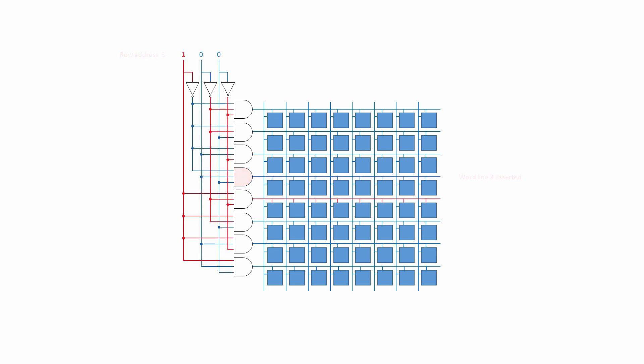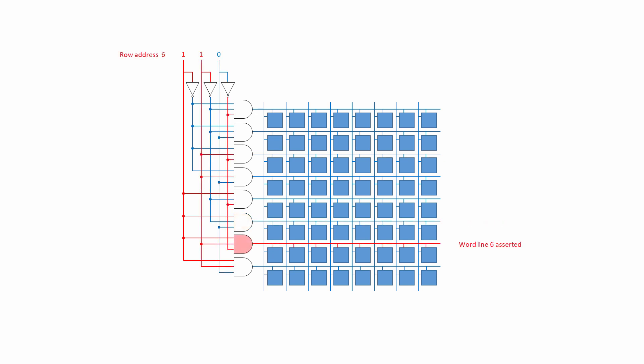Row address 100, the number 4 in denary, asserts word line 4. Address 101, 5 in denary, asserts word line 5. And address 110, the number 6, asserts word line 6. Finally, row address 111, which is 7 in denary, asserts the bottom word line.